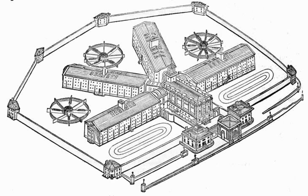But several types of crime are very well explained by routine activity theory, including copyright infringement related to peer-to-peer file sharing, employee theft, and corporate crime.